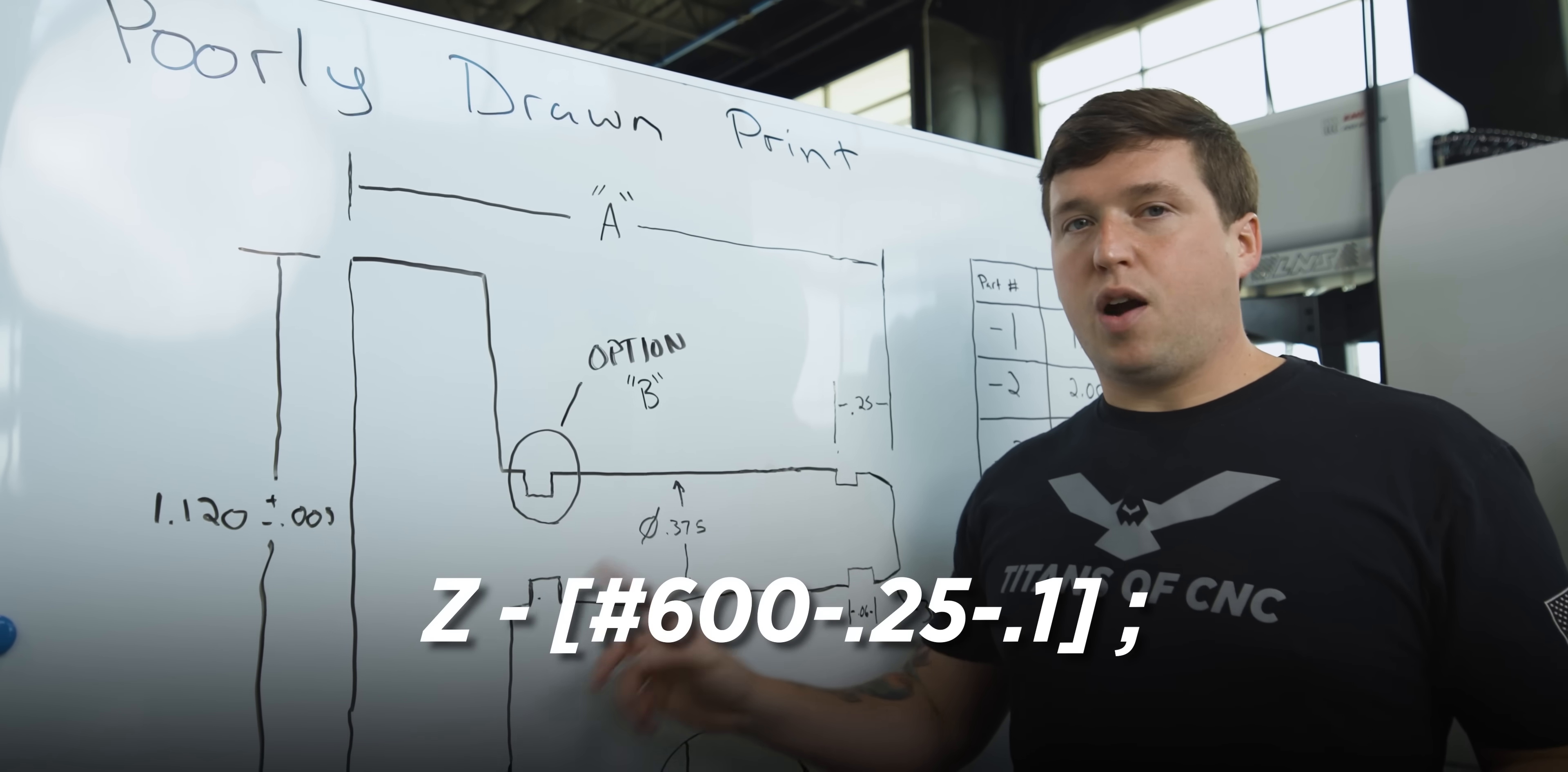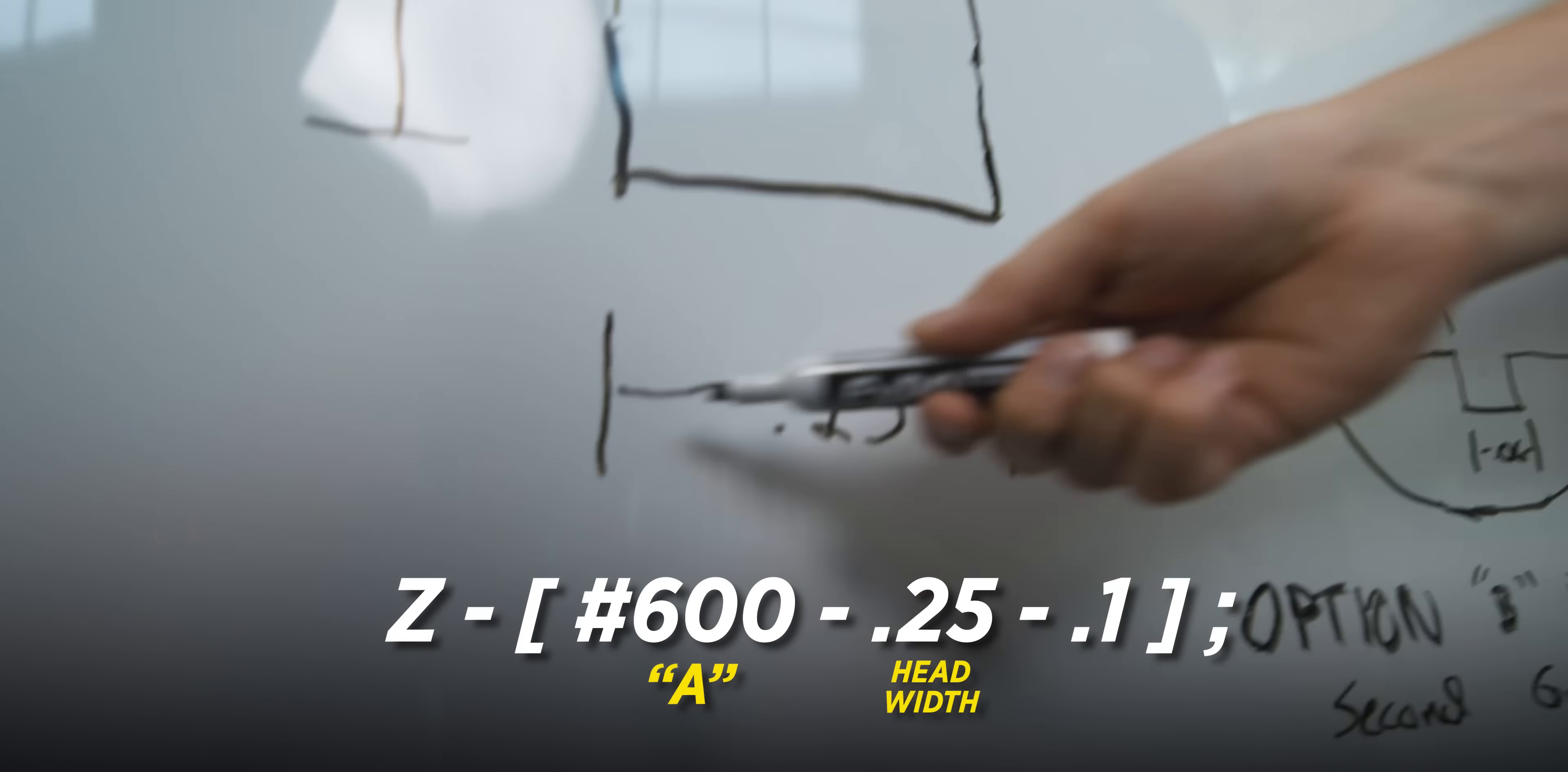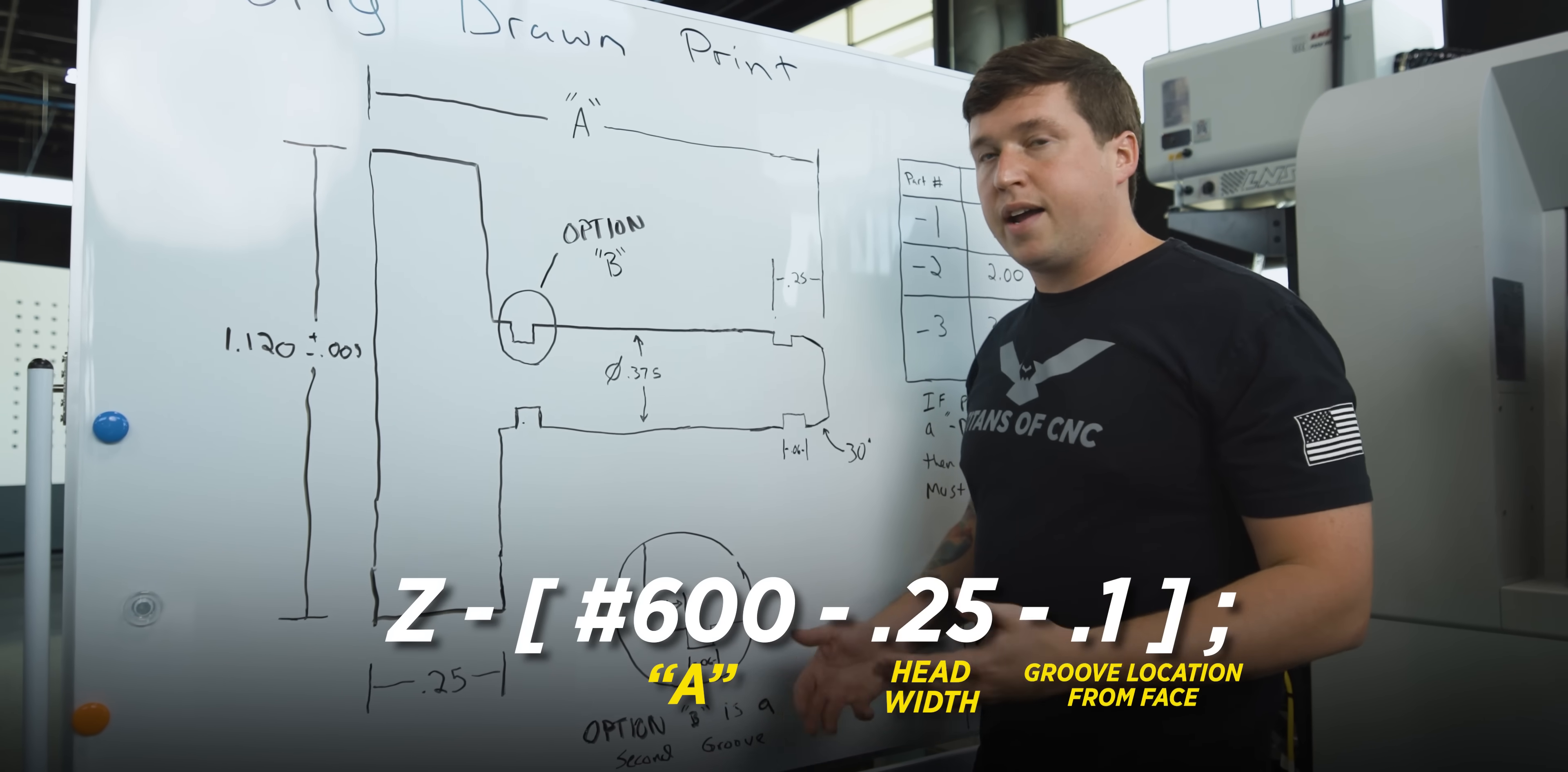Where is this groove going to be in our program? It's going to change depending on our overall length, because A, which is pound 600, is going to be the end of the part. We're going to minus the 0.250 for our head here, and then right here I drew a section of the print that shows you the groove from this face is a hundred thousandths. So that's the equation right there.